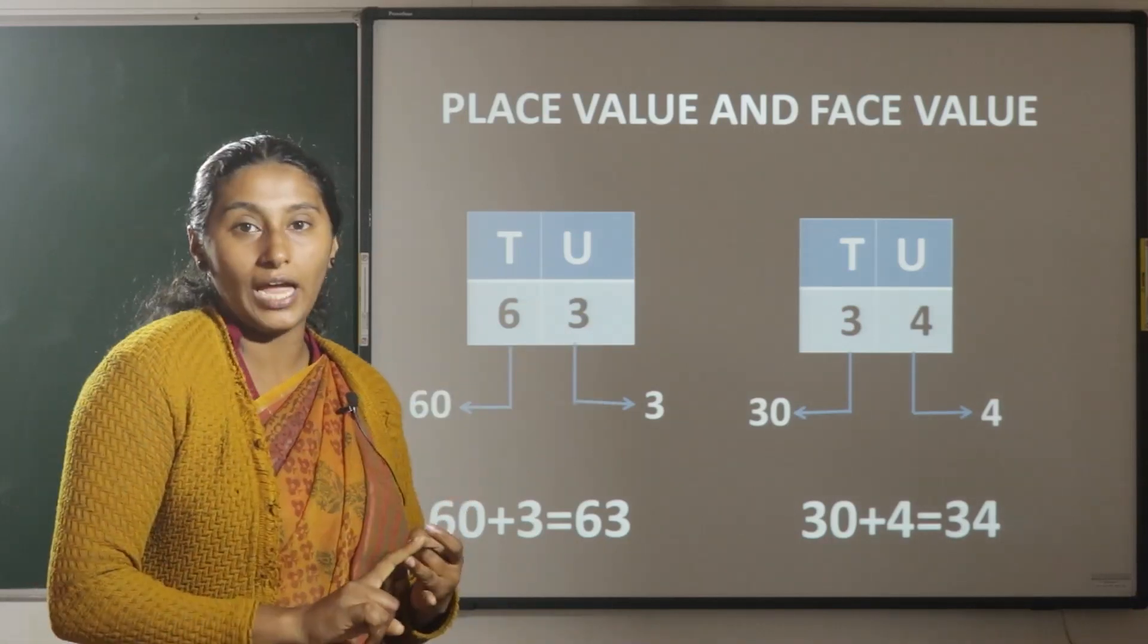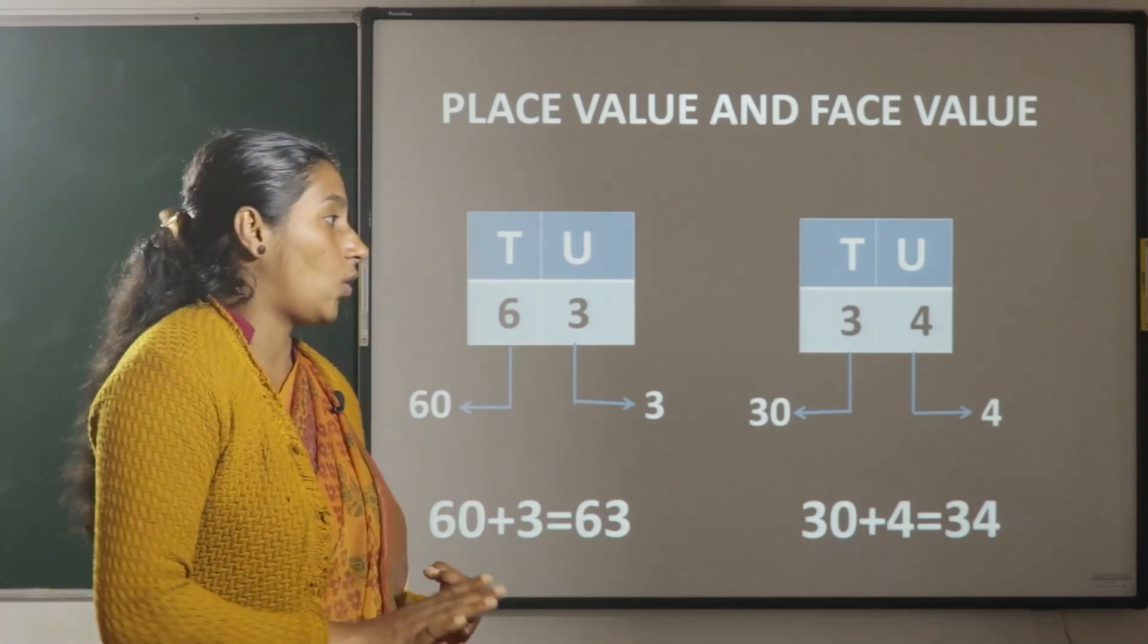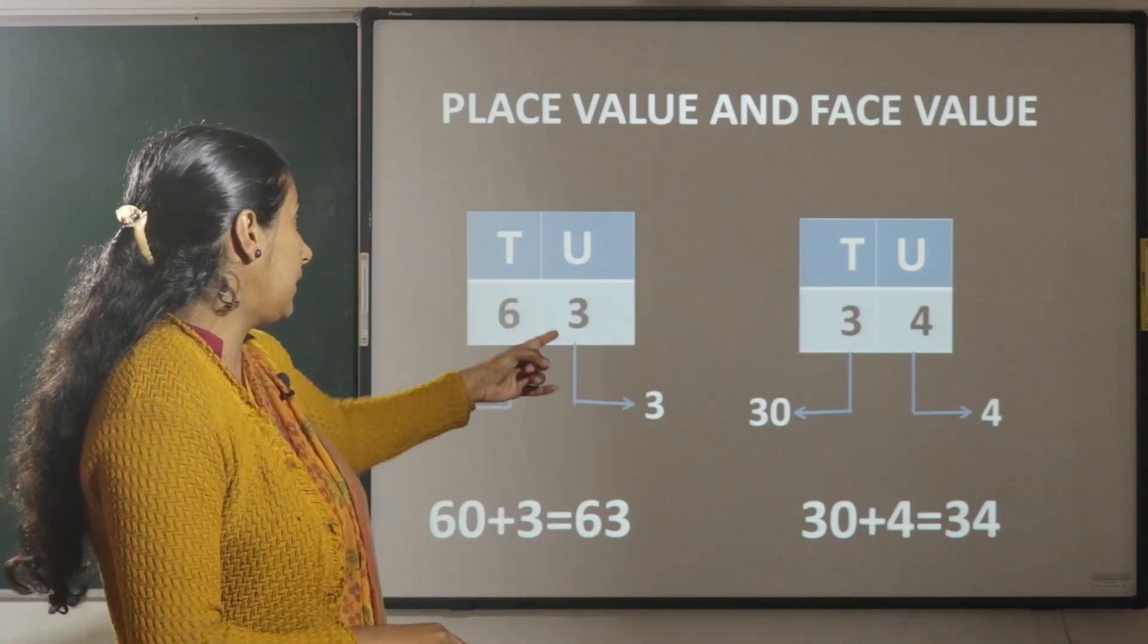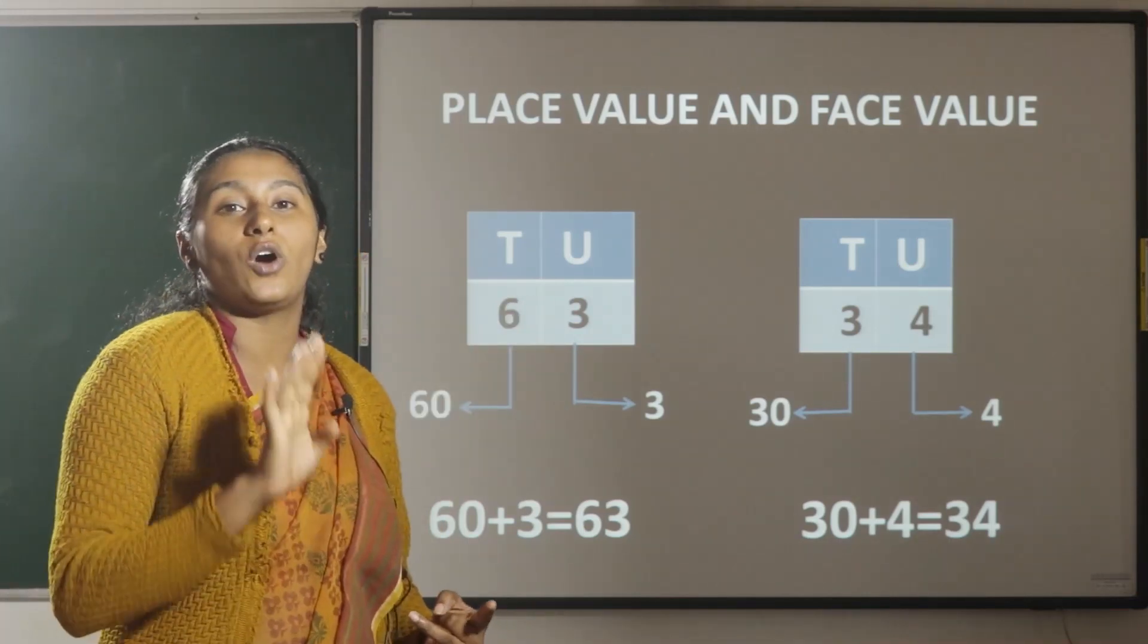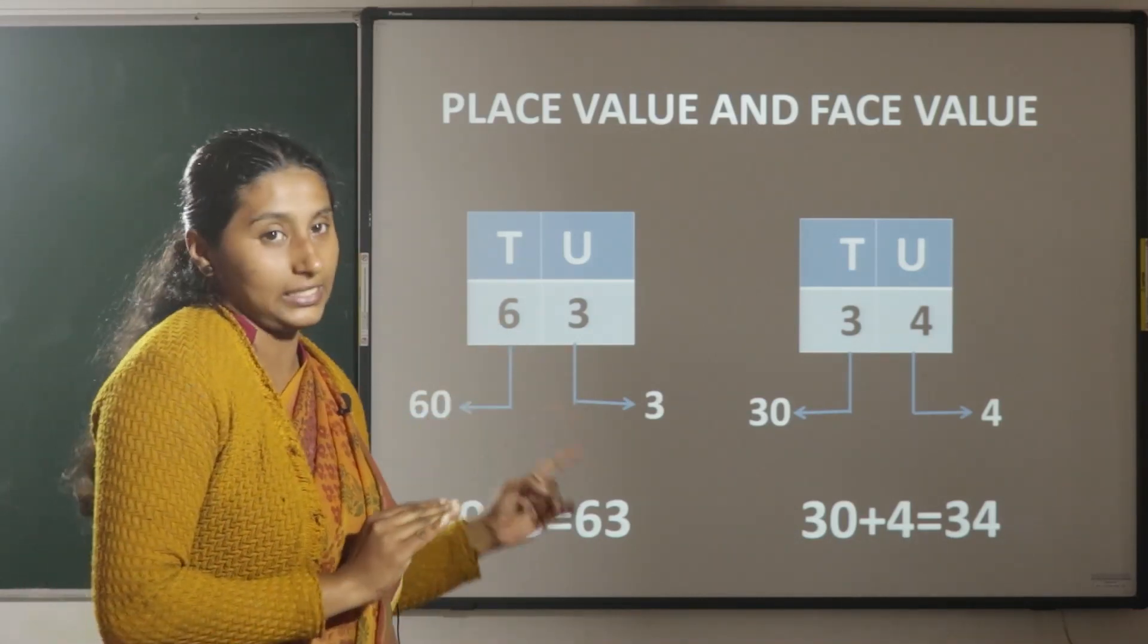Here 4, the place value is 4 and the face value is 4. And number 3, the face value of 3 is 3 and the place value of 3 is 30.